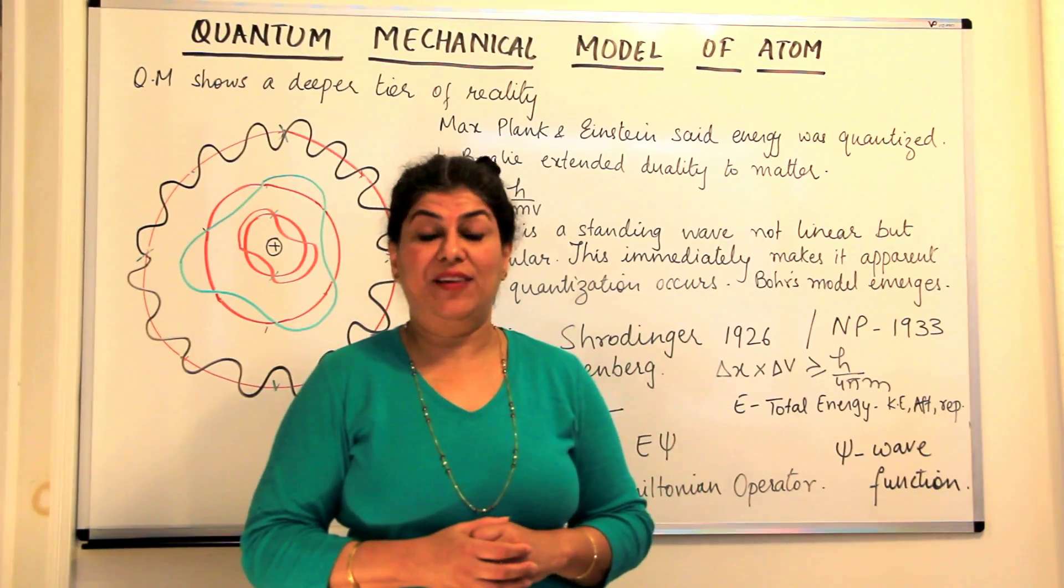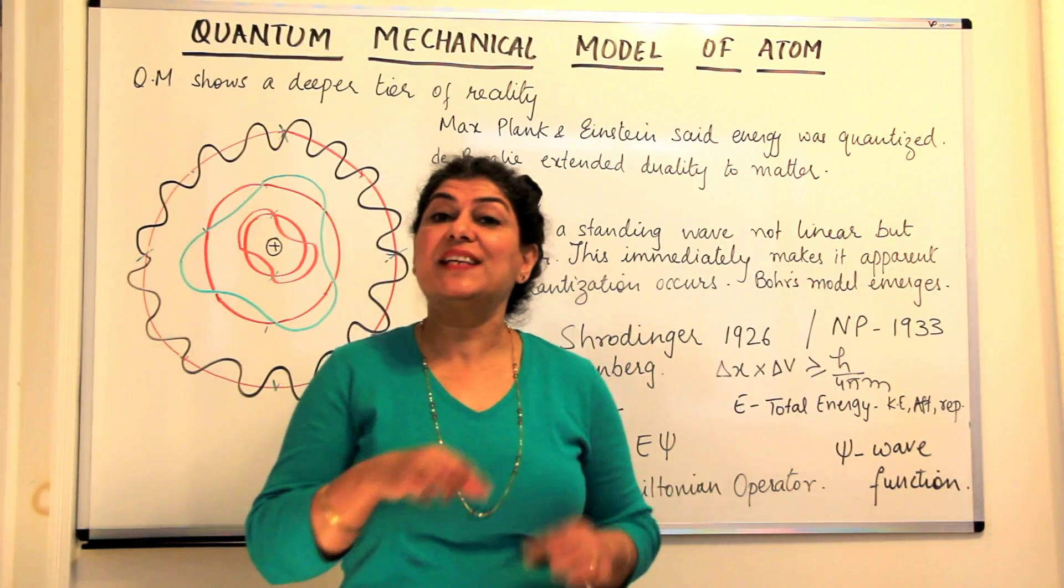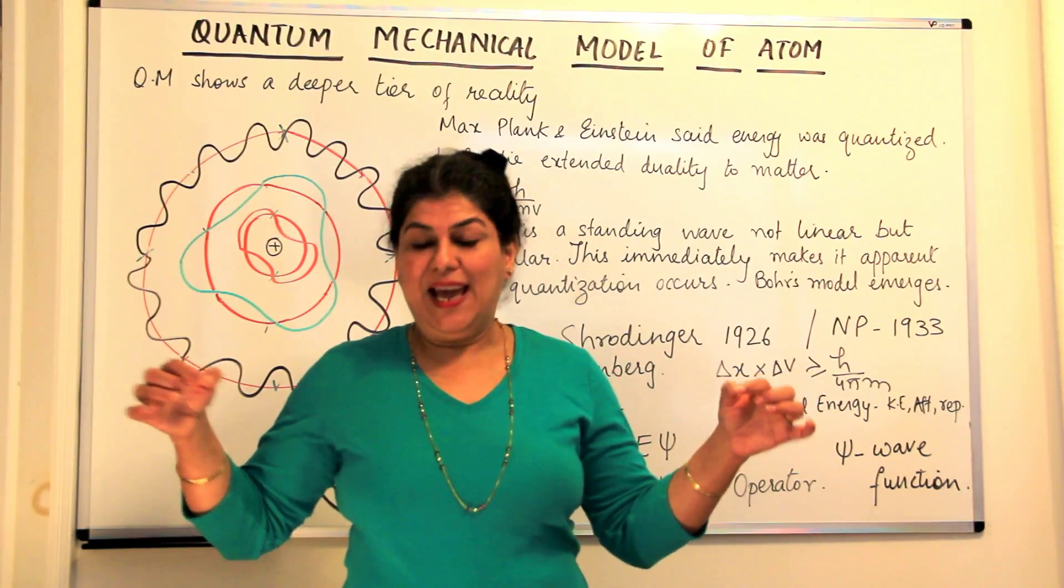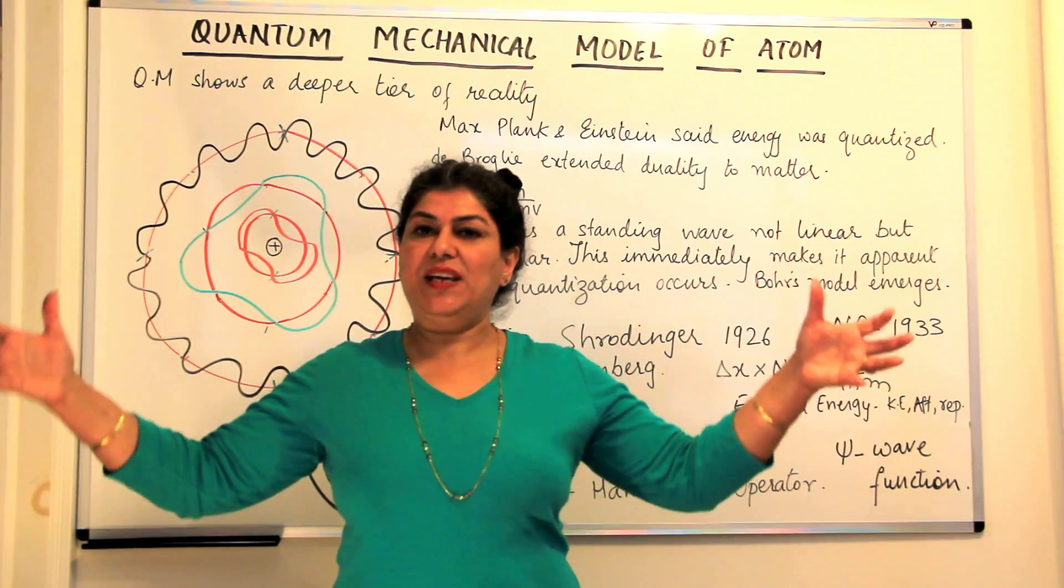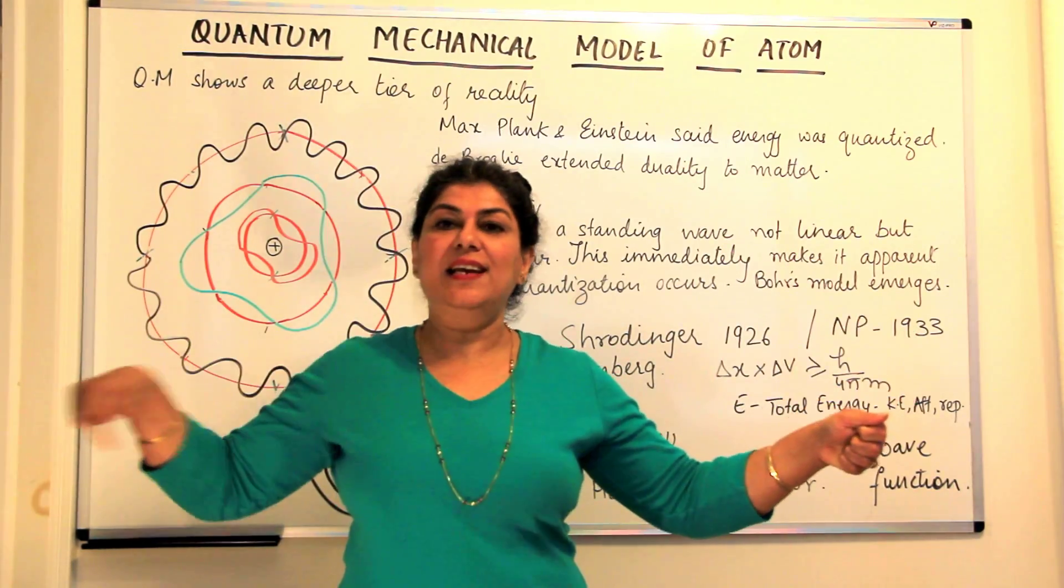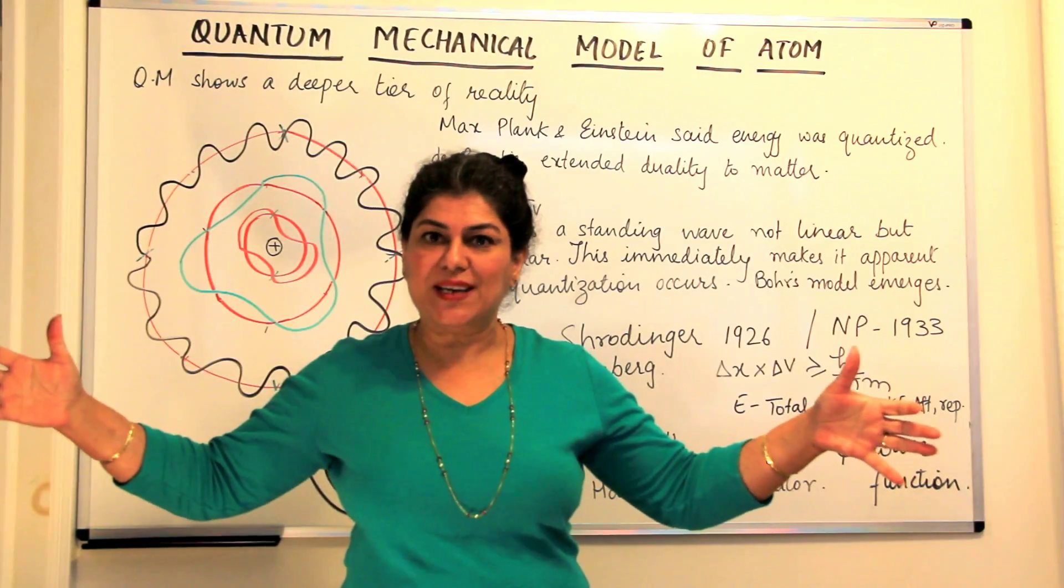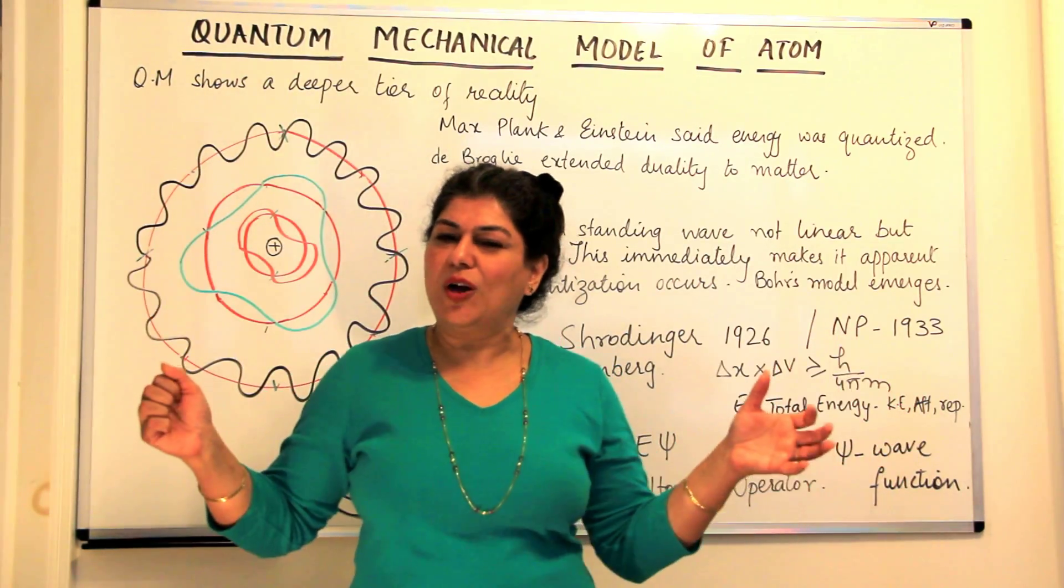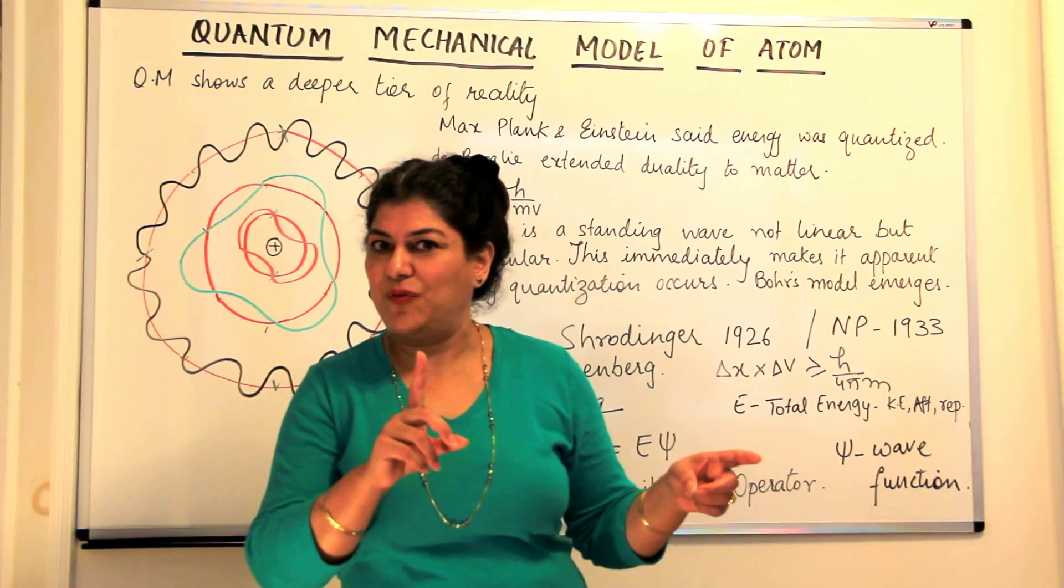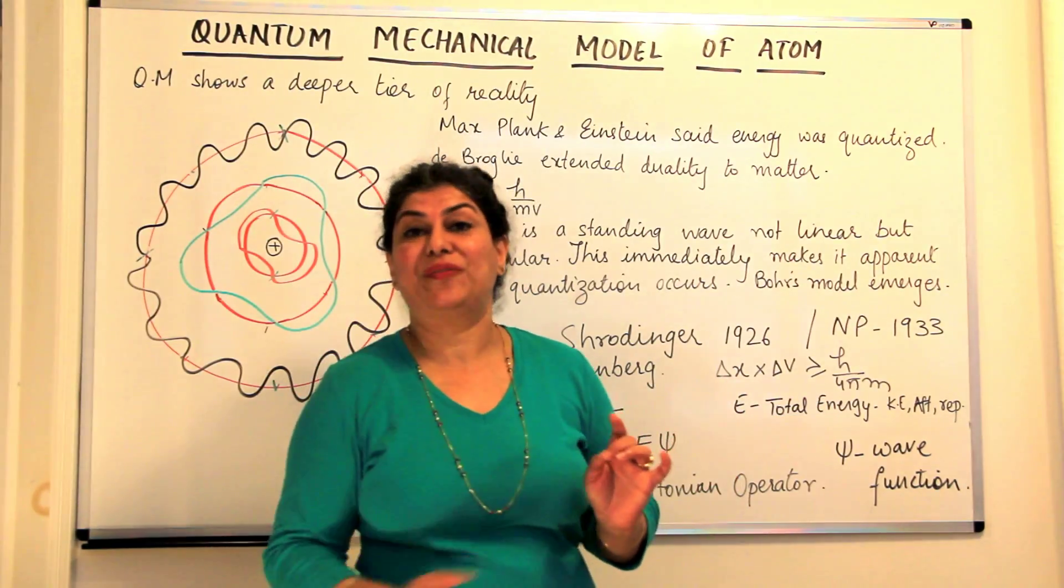Such a wave is known as a standing wave, but a guitar string is a linear wave because this guitar string is tied on two ends and it's linear, it's straight. And he said that an electron is not a linear wave, it is a standing wave but it's a circular wave.